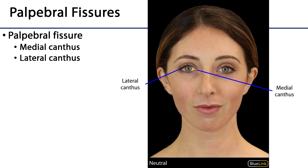Suffice it to say, all that we really need to understand about the palpebral fissure for this session is that there is a medial canthus and a lateral canthus of the eye. Those canthi are the areas where the palpebrae are coming together — the medial and lateral-most openings of the palpebral fissures.